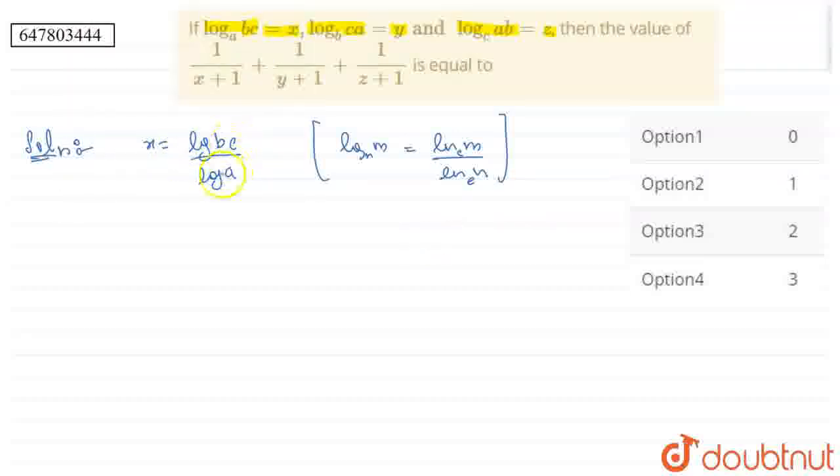So x is equal to log bc upon log a, y is equal to log ca upon log b, and similarly z is equal to log ab upon log c.